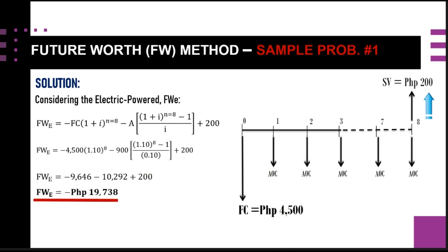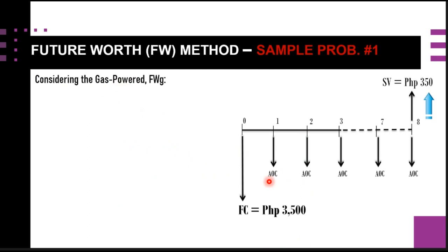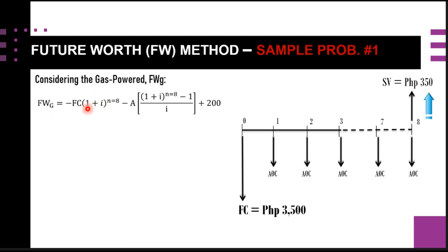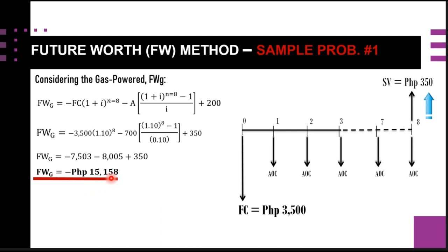Proceeding to the second alternative — the gas-powered machine — we draw its cash flow diagram from the table and write the corresponding FW equation. Substituting the first cost, annual operating cost, and salvage value, we calculate the future worth of the gas-powered machine as FW_G = −15,158 pesos.